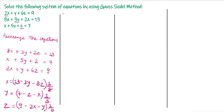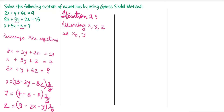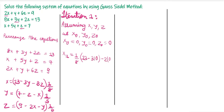Now we start with iteration 1, assuming x0 = 0, y0 = 0, and z0 = 0. Substituting into the first equation: x1 = (1/8)(13 - 3×0 - 2×0) = 1.625. Next, substituting x = x1 = 1.625 and z = z0 = 0: y1 = (1/5)(7 - 1.625 - 0) = 1.075.